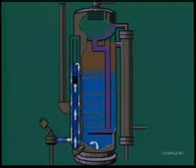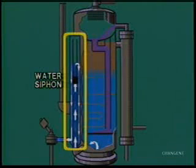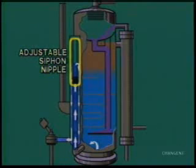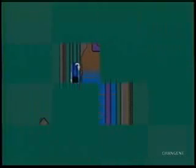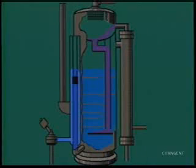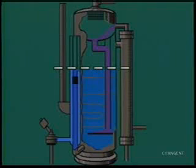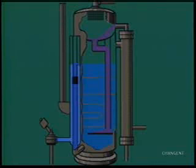The siphon system maintains the water level in the vessel. Water in the free water knockout section rises into the water siphon and flows over the adjustable siphon nipple, then leaves the unit through the water dump valve. Since water seeks its own level, the water level on the water siphon will be equal to the water level inside the treater. By changing the position of the siphon leg or nipple, the water level can be changed to maintain the oil-water interface.